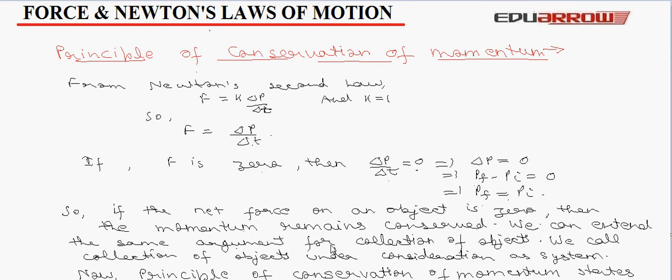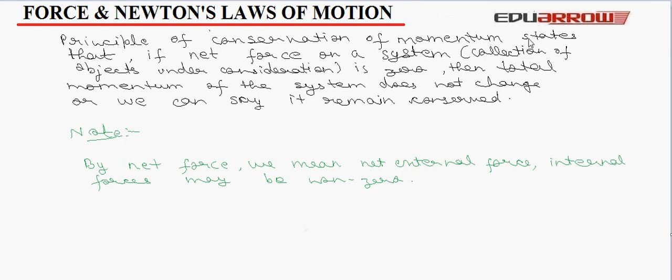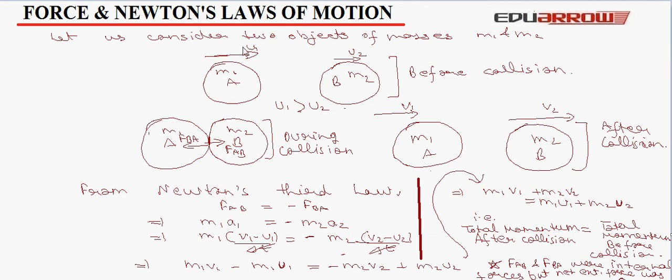We can extend the same argument for collection of objects. By collection of objects, we mean that if we consider two objects and then we see the external force on the combination of two objects. And this combination of two objects or the collection of objects under consideration is called a system. Now, principle of conservation of momentum states that if net force on a system, that is the collection of objects under consideration is 0, then total momentum of the system does not change or we can say it remains conserved. An important thing to note is the internal forces in the system will not be included. By net force, we mean net external force. Internal forces may be non-zero. Let us consider two objects of masses M1 and M2 moving with initial velocities U1 and U2 such that U1 greater than U2. Since U1 is greater than U2, hence they will collide and will exert a force on each other. Let after collision their velocities be V1 and V2.